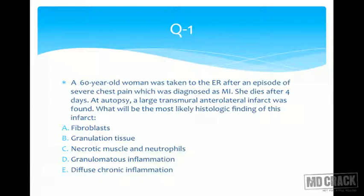What are the acute inflammatory cells? Neutrophils. Do you see neutrophils in the options? Yes — that's the answer. Macrophages follow later. You would not see fibroblasts or granulation tissue within four days. Granulomatous inflammation is not seen in MI. Diffuse chronic inflammation has nothing to do with an acute MI. So neutrophils is the correct answer.